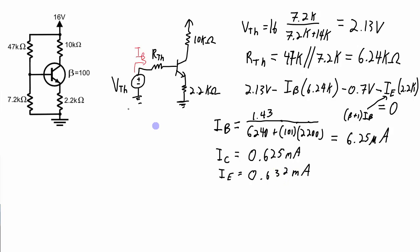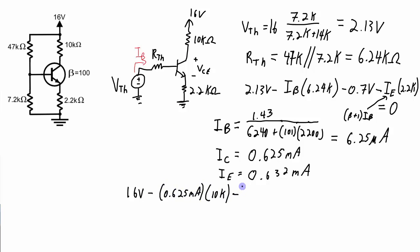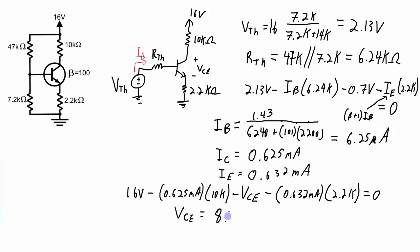To get the operating point I need one more piece of information: the collector-emitter voltage. For the collector-emitter voltage I can look at this voltage loop. So 16 volts minus the drop across the 10k resistor, minus the collector-emitter voltage, minus the drop across the 2.2 kilohm resistor brings me to 0. I have only one unknown here, which is VCE.